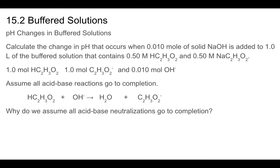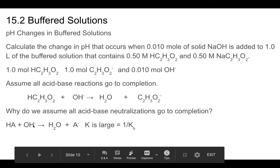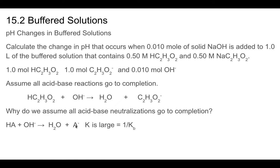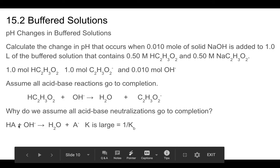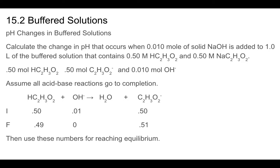Why do we assume acid-base neutralizations go to completion? Looking at: HA + OH⁻ → H₂O + A⁻, written in reverse it's the Kb reaction for the conjugate base. The K for the forward reaction is 1/Kb. Since Kb for weak bases is small, 1/Kb is large, meaning the reaction lies far to the right and we don't need to treat it as an equilibrium.